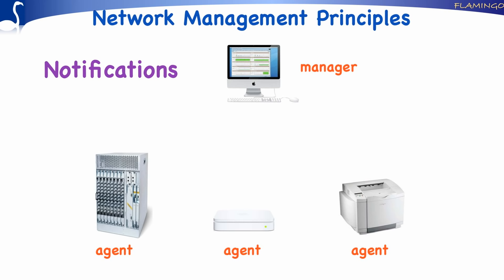In the first version of SNMP, agents could signal only a limited number of events to the manager using the TRAP PDU. In later versions of SNMP, the capabilities for agents to notify all kinds of events have been extended. For that purpose, a new PDU was introduced, the INFORM PDU, which is acknowledged by the manager, so the agent knows the manager is aware of the event.